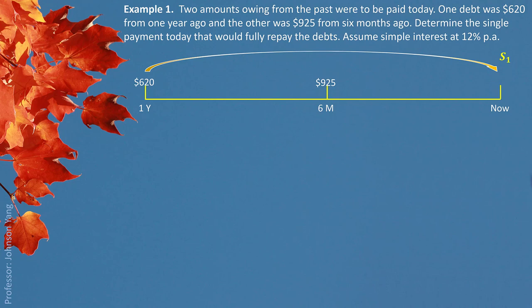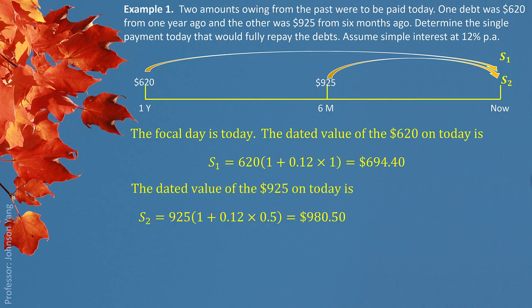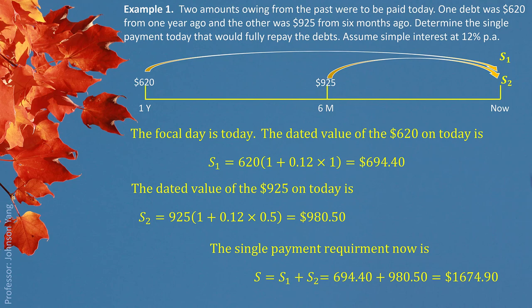That would be the equivalent value S1. For $925 from six months ago, it will be worth more today when interest is added in — the equivalent value would be S2. So clearly we are going to calculate two future values. $620 with one year of interest at 12% gives us equivalent value $694.40. And $925 with six months of interest gives us $980.50. Put them together — the single payment today to finish this debt would be $1,674.90.